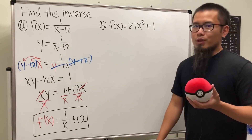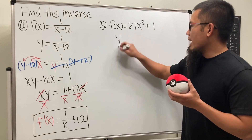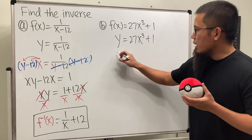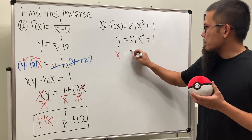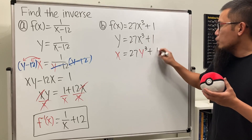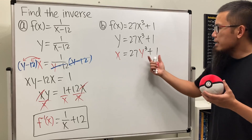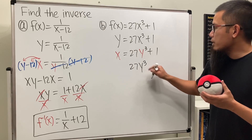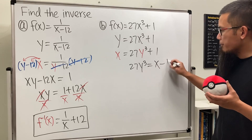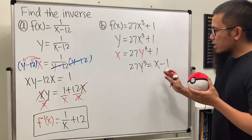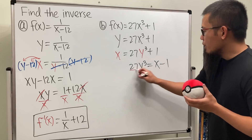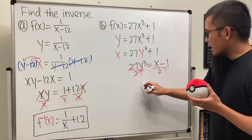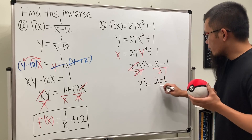For the second one, we do the same thing: change f of x to y, giving us y equals 27x cubed plus 1. Then switch x and y, so we have x equals 27y cubed plus 1. To solve for y, subtract 1 from both sides, giving us 27y cubed equals x minus 1. Then divide both sides by 27, writing it as a fraction over 27, giving us y cubed equals x minus 1 over 27.